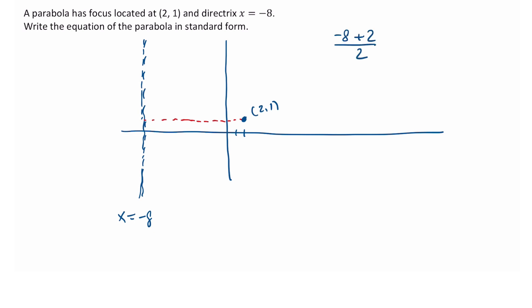So negative 8 plus 2, all divided by 2, is negative 6 over 2, which is negative 3. So that means that our vertex is at (-3, 1).